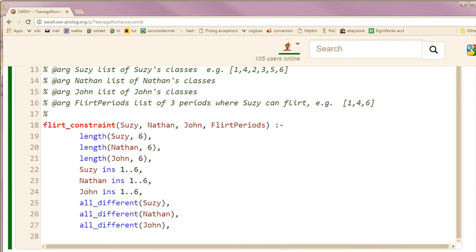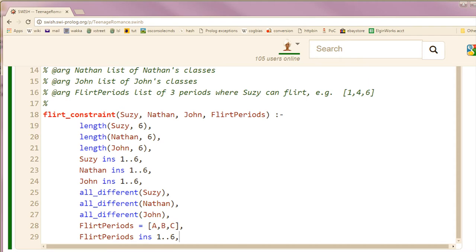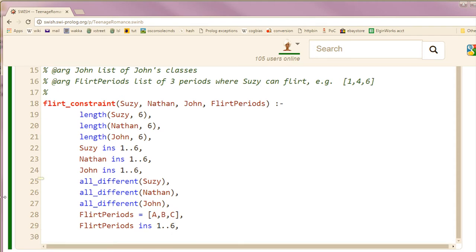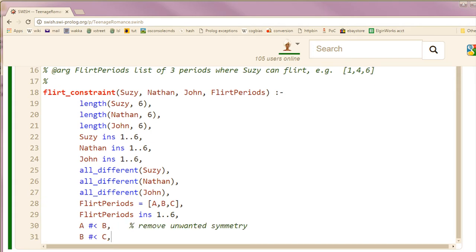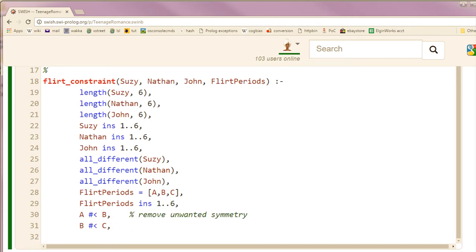Susie wants to flirt in three periods, and they have to be classes. We could use all different, but we also don't want different solutions where we report Susie can flirt in periods one, three, and four, and then one, four, three, for example, and all the other permutations. So we're going to enforce order.